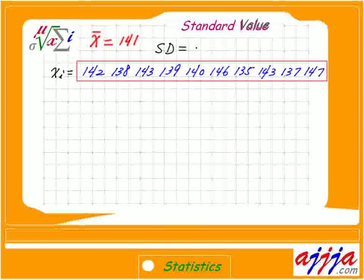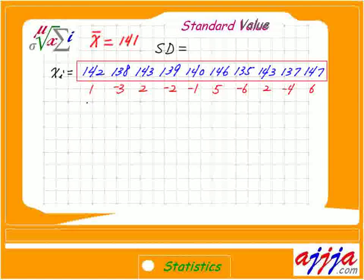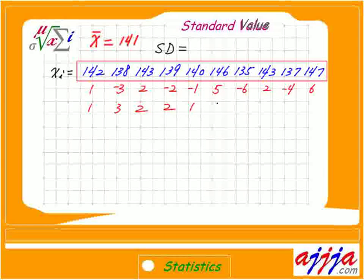For standard deviation, step number one: we subtract the mean value from each datum — each value. So 142 minus 141 equals 1, and another value minus 141 equals negative 3, and so on. Now we need just the positive answers — in other words, the absolute value — because studying two values where positive or negative doesn't matter. That was a mistake. So we use absolute value: 1, 3, 2, 2, 1, 5, 6, 2, 4, 6.